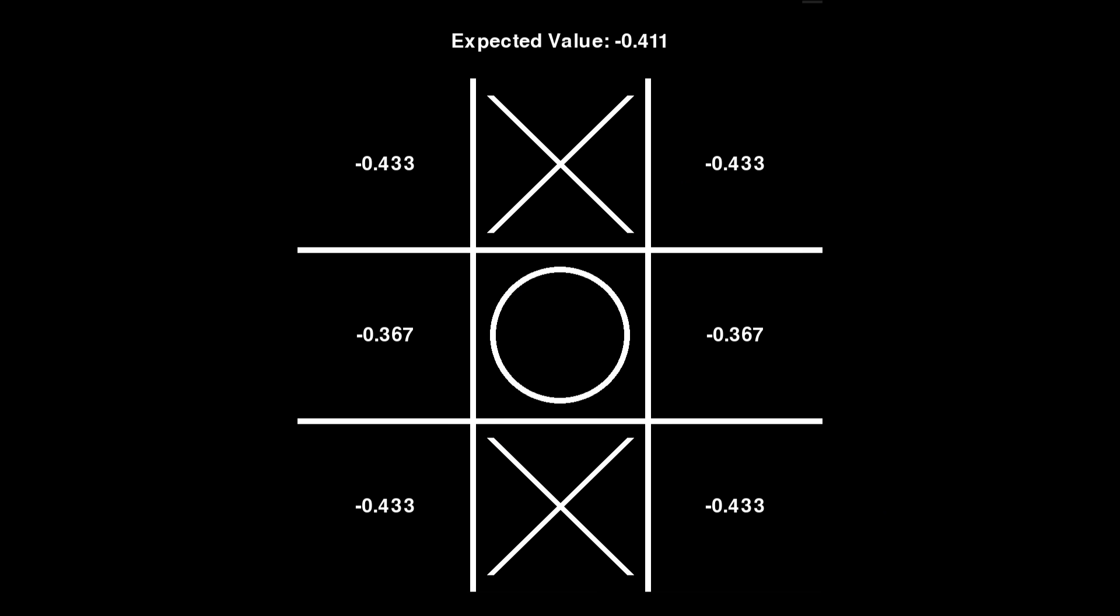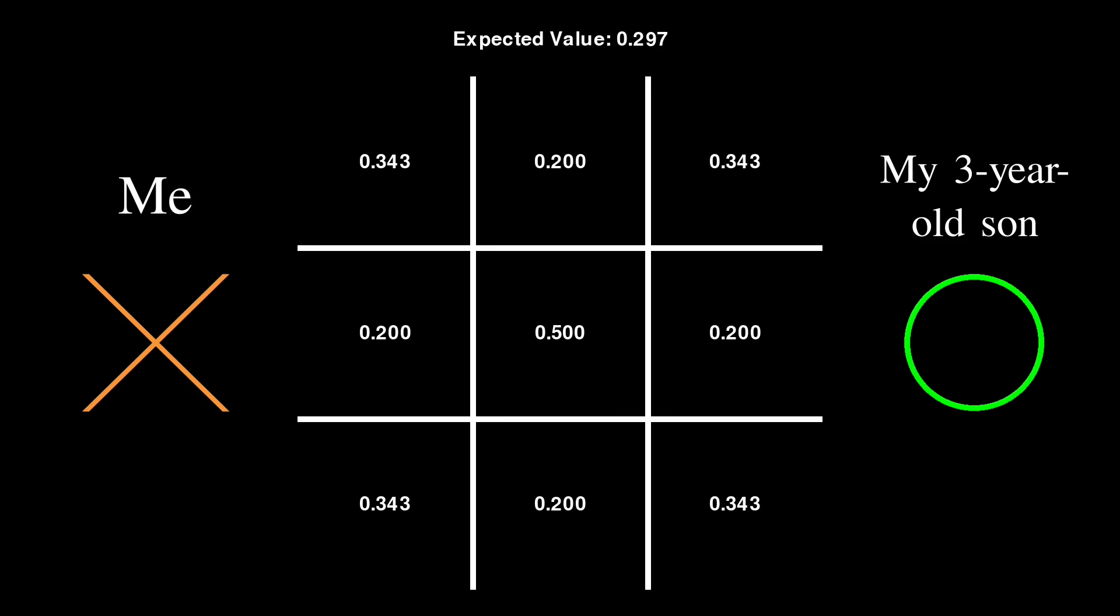So let's take a look at a game I played with my three-year-old and see how this algorithm works in action. I played as X, going first, which is a significant advantage, as you can see by the expected value of 0.297 for the empty board.